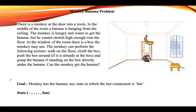In this lecture, let us see how to solve the monkey and banana problem. The scenario is: there is a monkey at the door of a room. In the middle of the room, there is a banana hanging from the ceiling. The monkey is hungry and wants to get the banana, but it can't stretch high enough from the floor. At the window of the room there is a box, and with the help of this box the monkey can get the banana. The monkey can perform actions like walking on the floor, climbing the box, and pushing the box around.